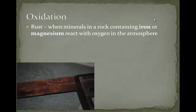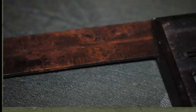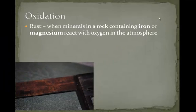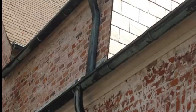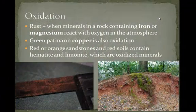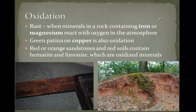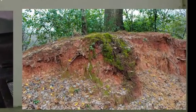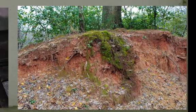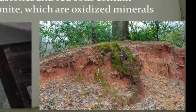Oxidation — you know this as rust. When minerals in a rock containing iron or magnesium react with oxygen in the atmosphere, a mineral called an oxide is formed. The green patina on copper is also an oxidation reaction. If you see red or orange sandstones or red soils, they contain hematite and limonite, which are the oxidized minerals that were in the soil.